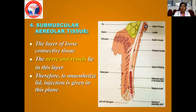The next layer is your submuscular areolar tissue. After the muscles, you have areolar tissue which consists of nerves and vessels lying in this layer. This is also a connective tissue layer. Therefore, whenever you are giving an anesthetic injection, this is given in this plane.